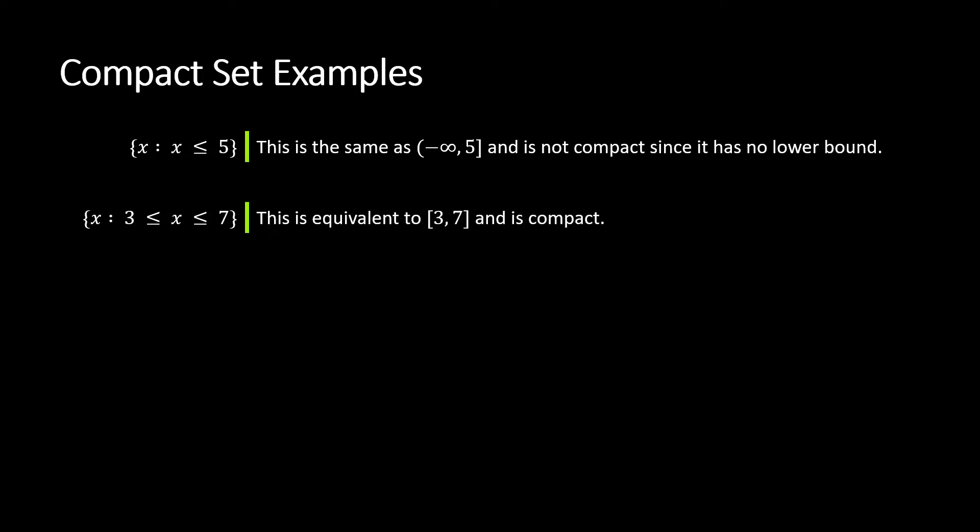Another example, again, set builder notation here. All the x such that x is greater than or equal to 3 and less than or equal to 7. So this would be compact. It's a nice interval. There are numbers to the left, meaning smaller. Like 2 is smaller than everything in the set, and there are numbers to the right that are bigger. Like 8 is bigger than everything in this set. And we are including both endpoints, 3 and 7 are both in there. So this is a compact set.